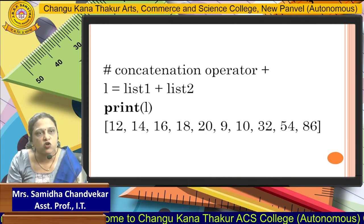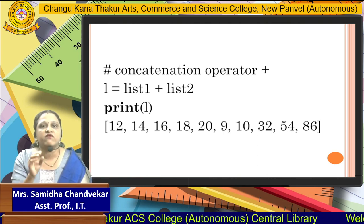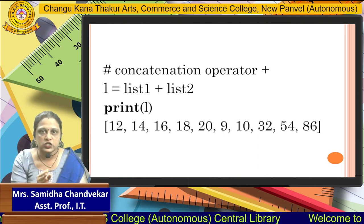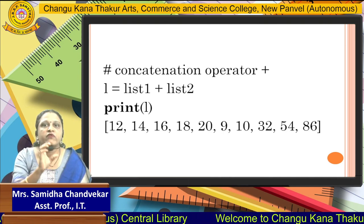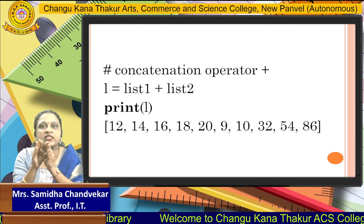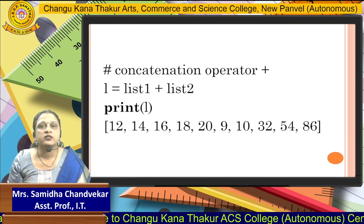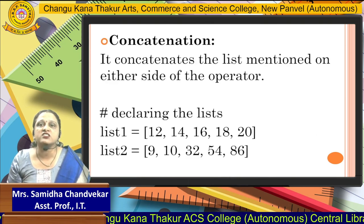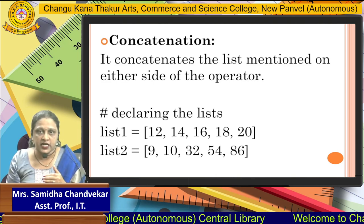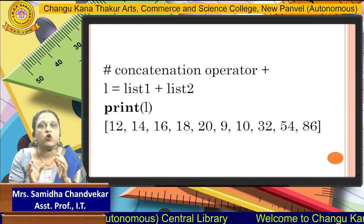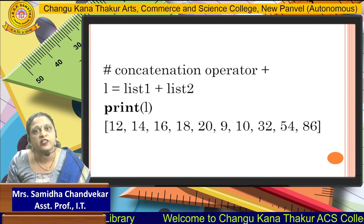The plus operator works as concatenation. L = list1 + list2. That means the elements of list1 get added and concatenated with list2 to make one new list L. So L becomes [12, 14, 16, 18, 20, 9, 10, 32, 54, 86] — the 2 lists get concatenated. This is the concatenation operation.